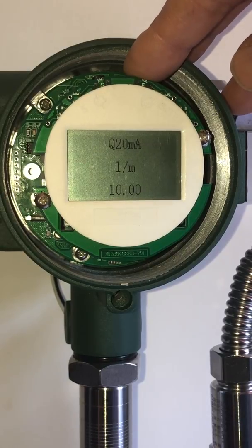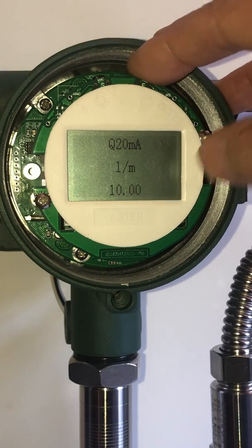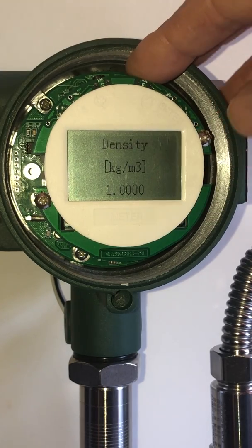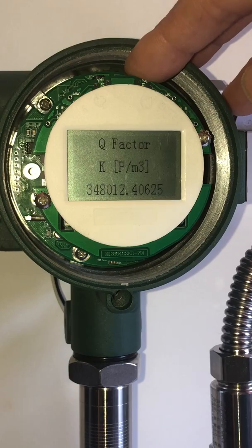The 4 to 20 milliamps is set for 10 liters per minute full scale. The density in kilograms per meters cubed, you can actually change those.